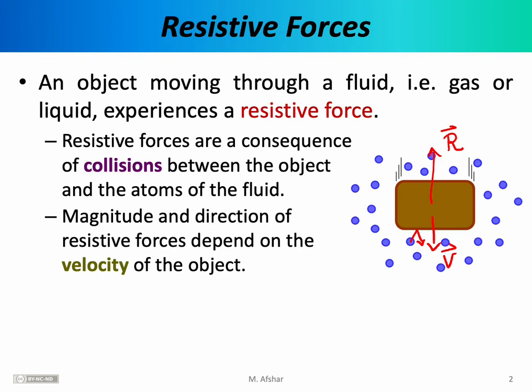On the other hand, if we were talking about a submarine or a torpedo moving horizontally underwater, the velocity vector points in the horizontal direction, in which case the collisions are exerting a force to the right. So the resistive force is pointing opposite to the direction of motion. The direction of this resistive force depends on what the object is doing — it depends on the velocity of the object.